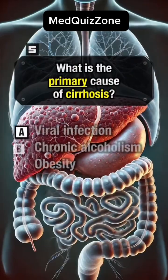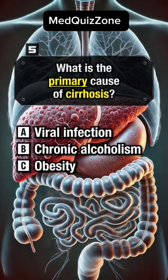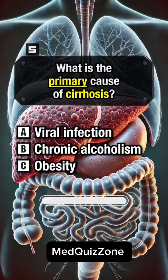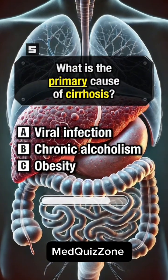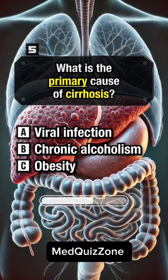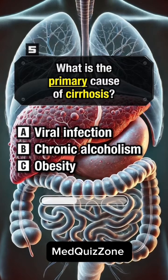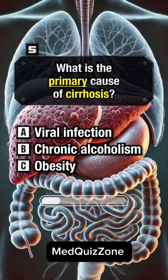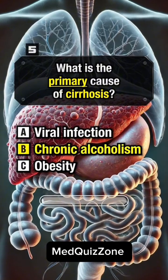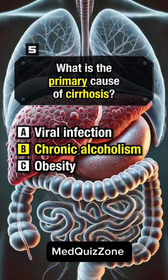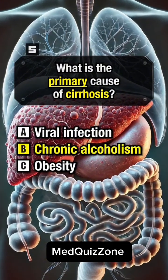What is the primary cause of cirrhosis? Answer B, chronic alcoholism.